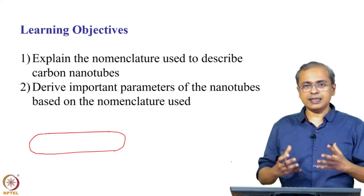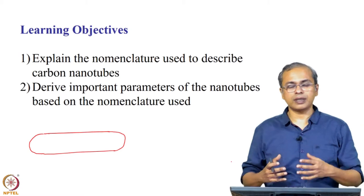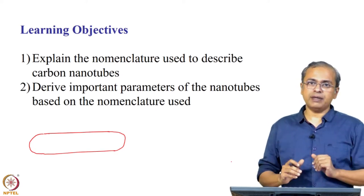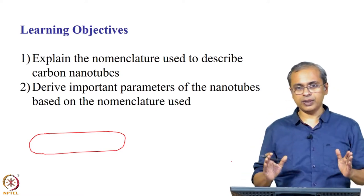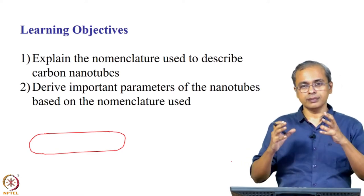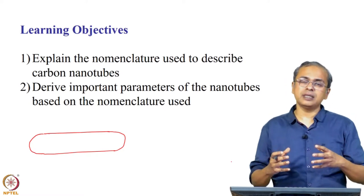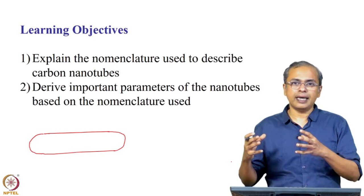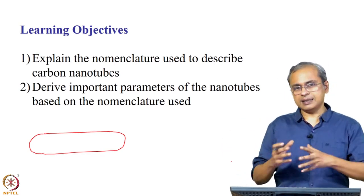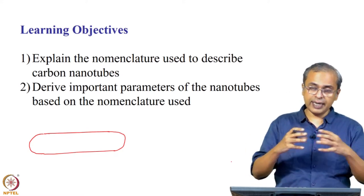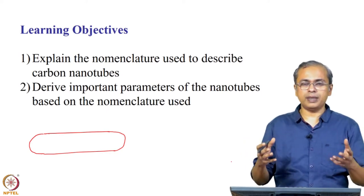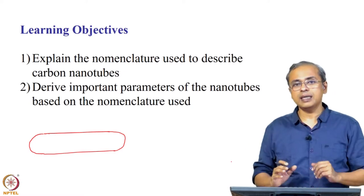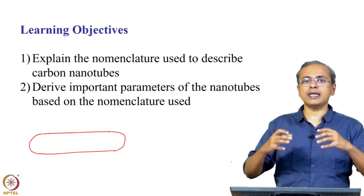We want to say something about its diameter and how the carbon atoms are lined up with respect to each other. To do that, one approach is to start with a single graphene sheet and then fold it to create the carbon nanotube. I must point out that in the general synthesis of carbon nanotubes, this is not the process that is actually used in labs.